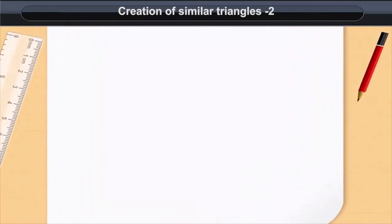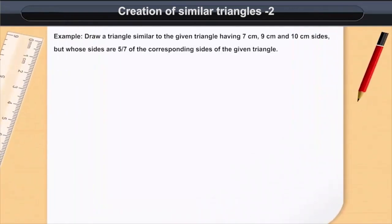Creation of similar triangles, too. Example: Draw a triangle similar to the given triangle having sides of length 7 cm, 9 cm, and 10 cm, but whose sides are 5/7 of the corresponding sides of the given triangle.